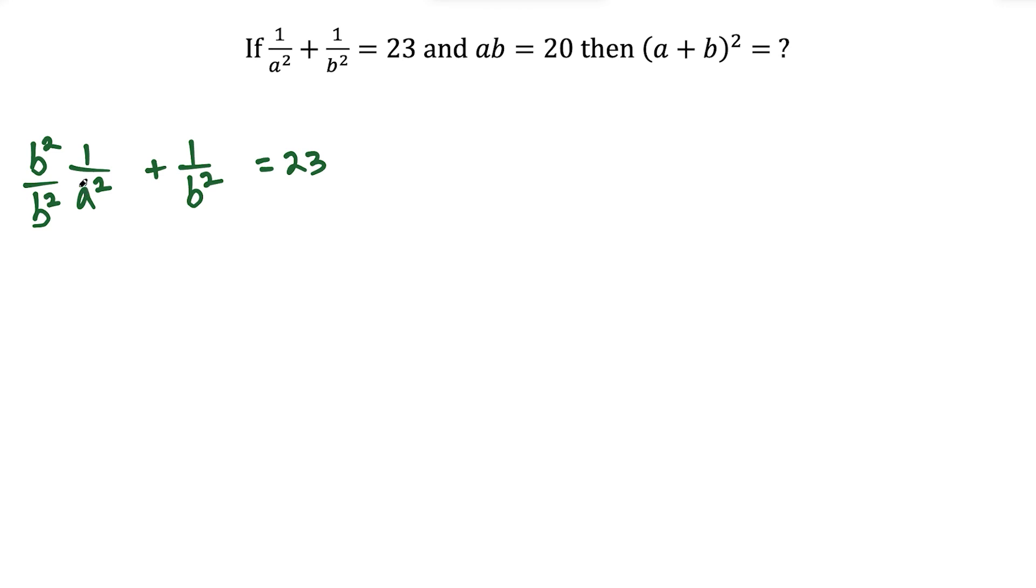So I would multiply the top and bottom of the first fraction by b squared. And for the second fraction, I'm going to multiply the numerator and denominator by a squared, because then we would have matching denominators of a squared b squared.